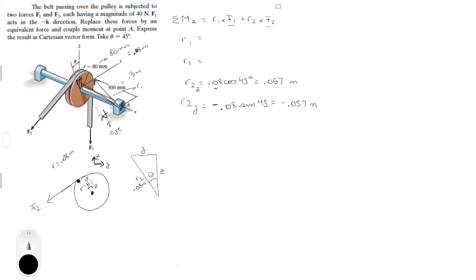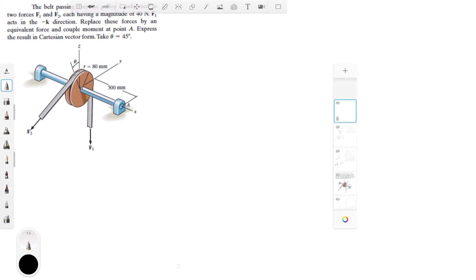So we have R2Z and R2Y. R2 equals minus 0.3I minus 0.057J plus 0.057K. Finding R1 is very simple because it has no Z component. R1 equals minus 0.3I plus 0.08J. Now that we have R1 and R2, we can find the cross products by doing the matrix method that I always do.